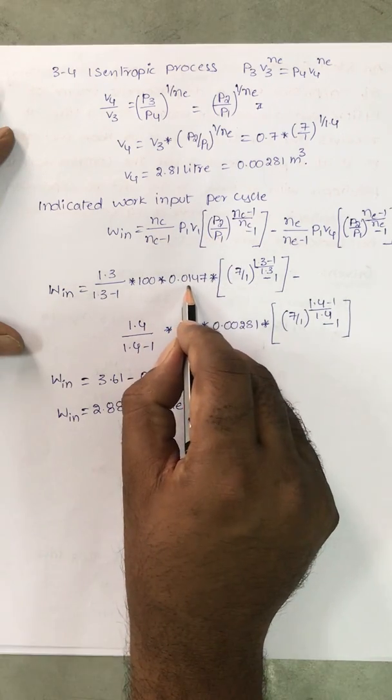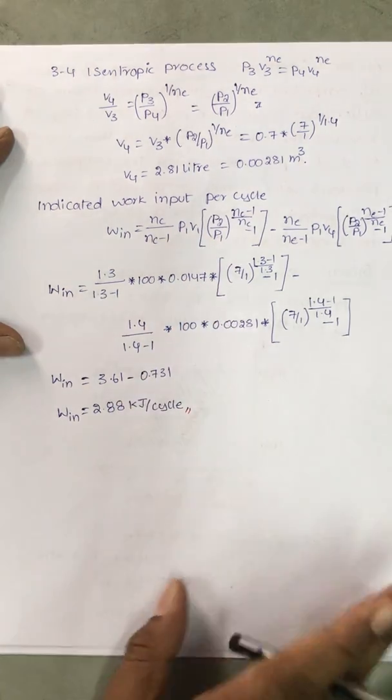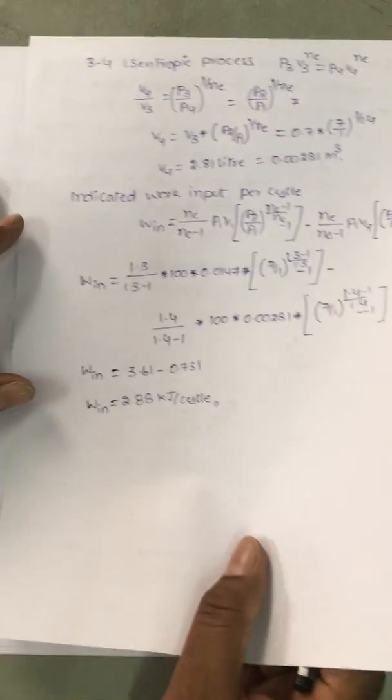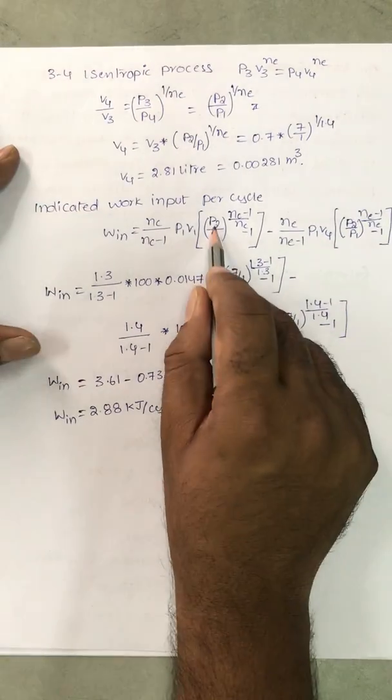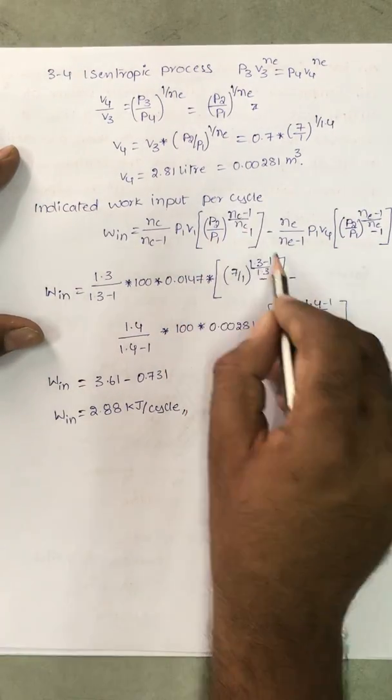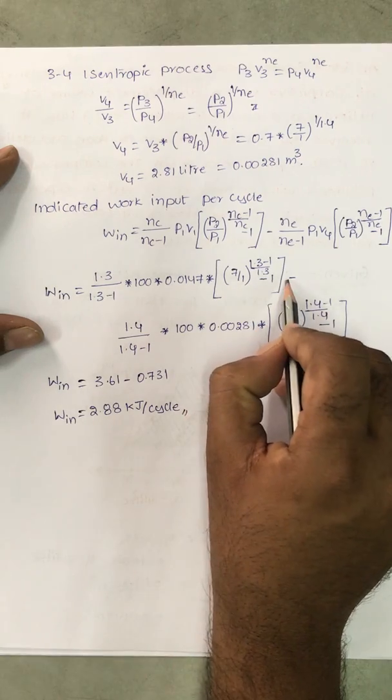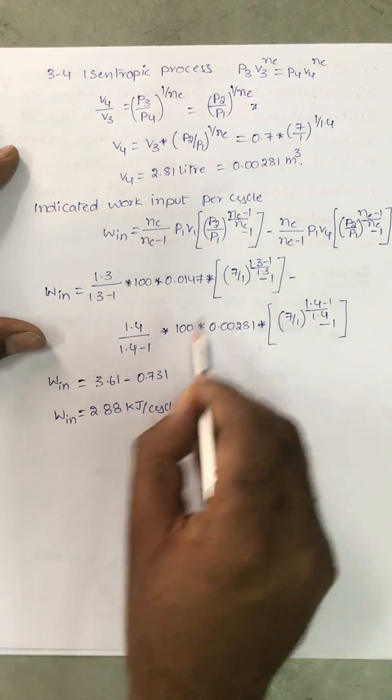P1 is 100, V1 is 0.0147 meter cube, into P2 7 by 1 all power 1.3 minus 1 by 1.3 minus 1, minus Ne 1.4 by 1.4 minus 1.